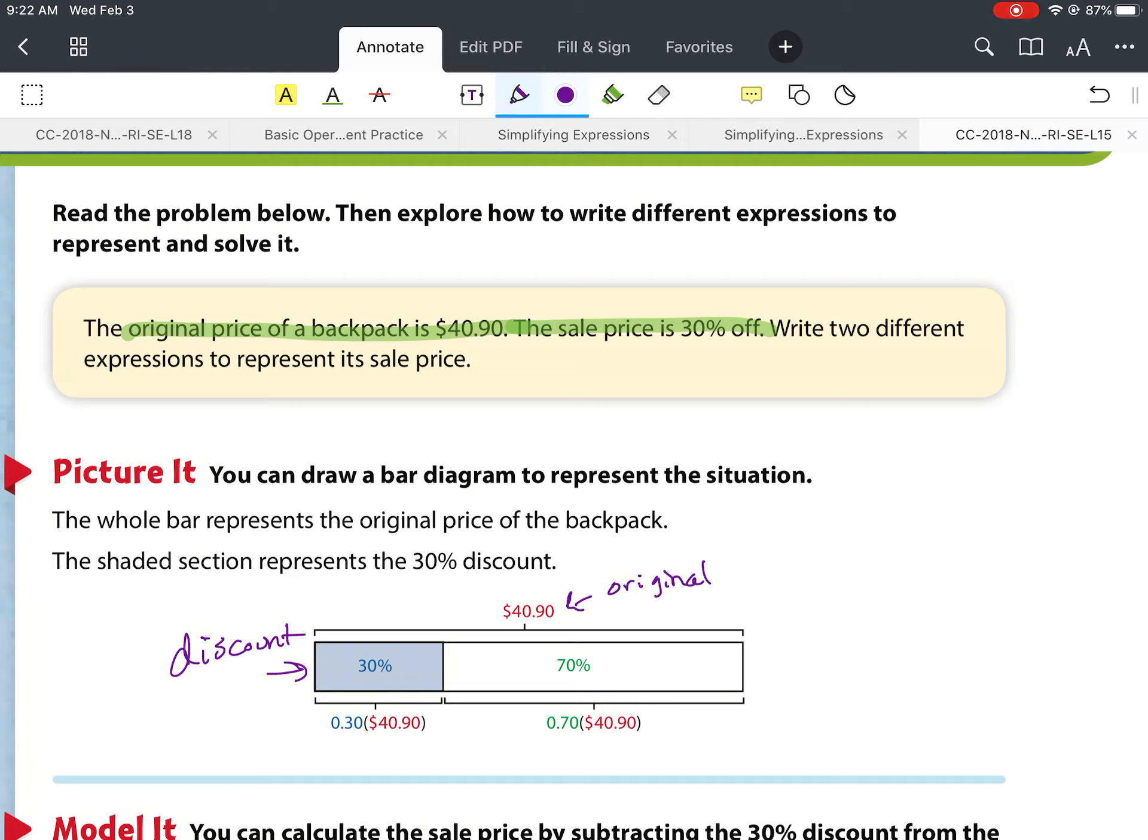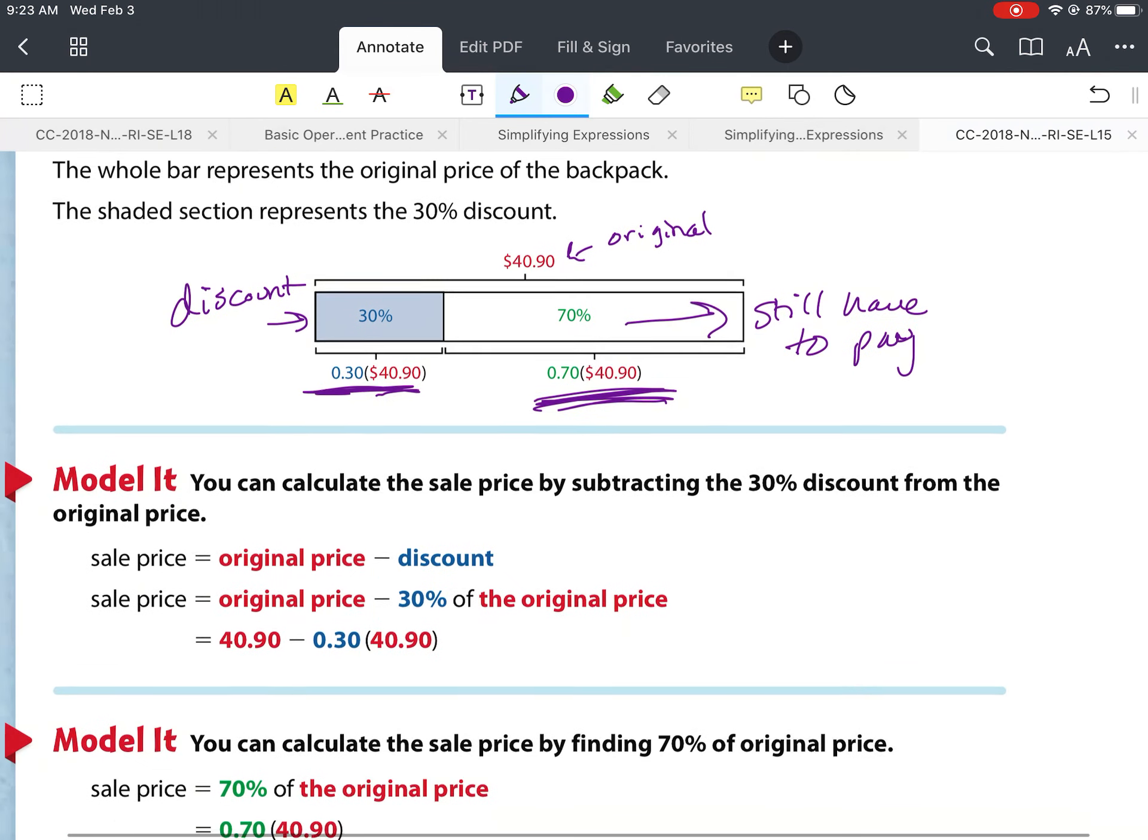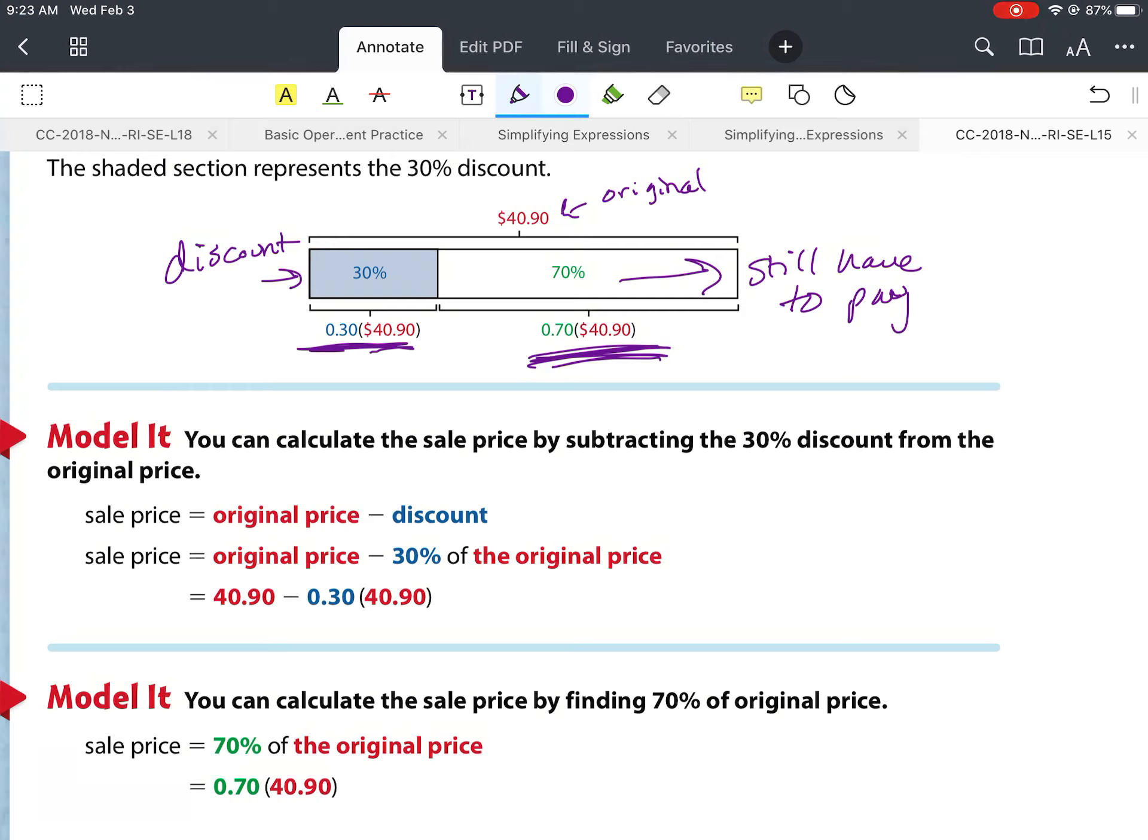This is the discount. And we're getting 30% off, but we're still responsible for paying 70% of that product, because 30% plus 70% is 100% of the product. As you can see, they've done the 30%, of course you've got to express it as a decimal, times the $40.90 to see how much we need to deduct off of that original price. Then we're going to take 70% times the $40.90, and that could tell you how much total that we need to pay.